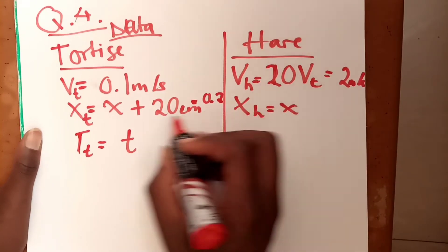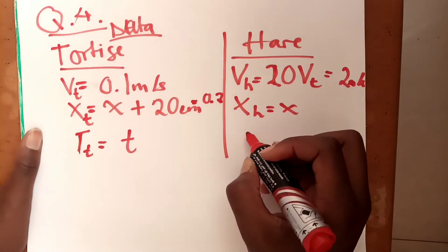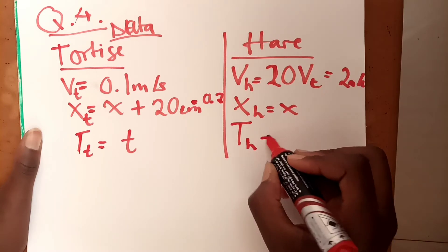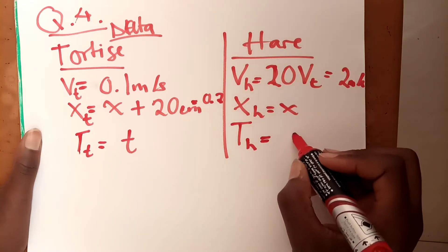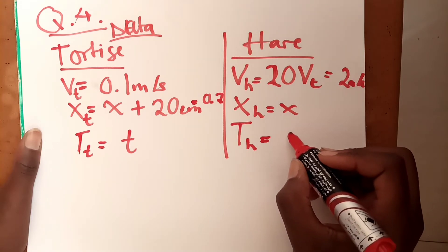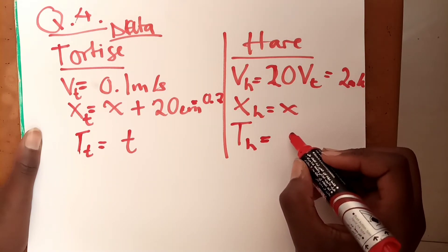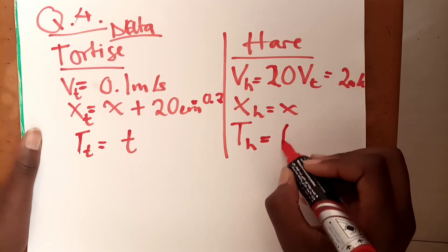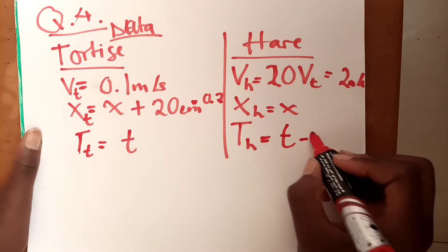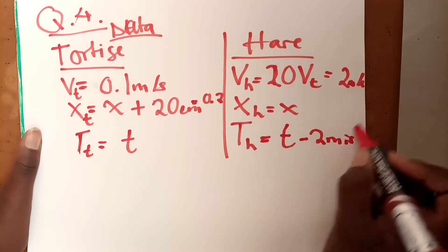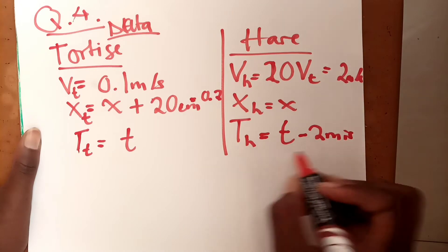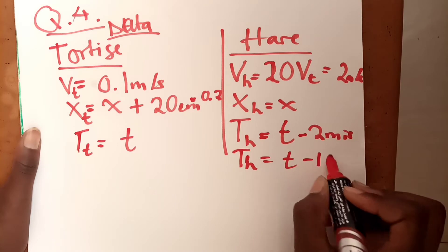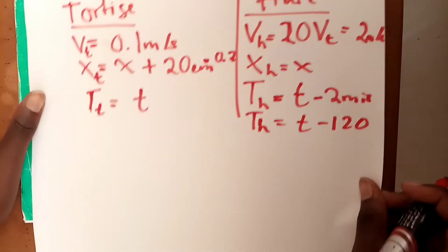The time for the hare to finish the race: the hare didn't actually finish the race — it was behind by 20 minutes of rest. We set the hare's time as t minus 20 minutes, and since we're working in seconds, we convert 20 minutes to seconds: 20 times 60 equals 120. So the hare's time is t minus 120 seconds.